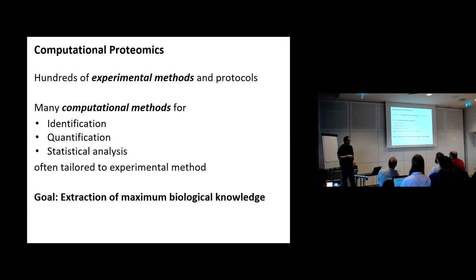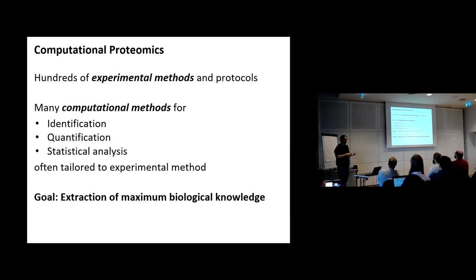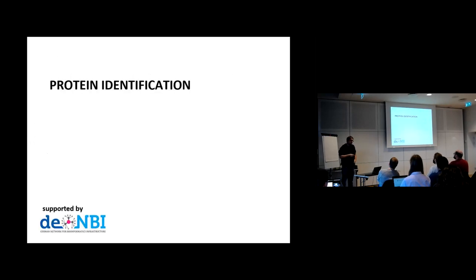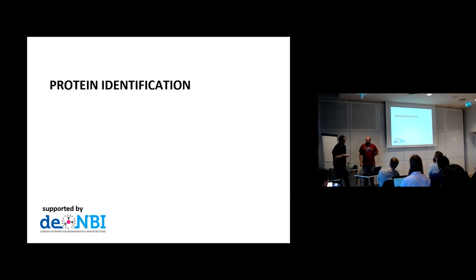There are literally hundreds of thousands of different experimental methods and protocols to identify and quantify proteins, and probably as many computational methods for identification and quantification, plus statistical analysis of the data. Often these combinations are closely tailored to an experimental method. The goal is to extract maximum biological knowledge by optimally combining those methods using computational approaches. We will now take a closer look into protein identification.